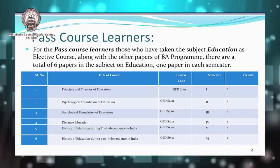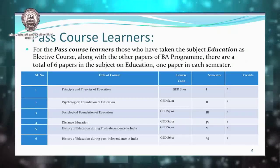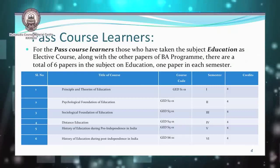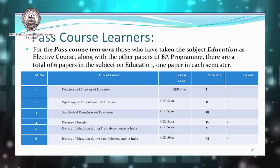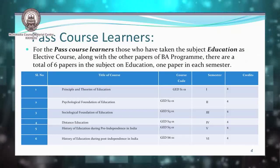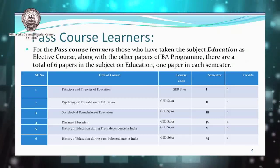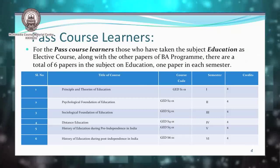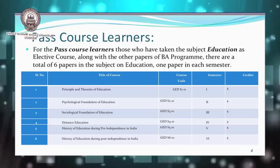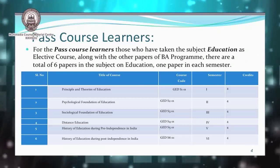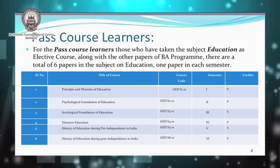For the pass course learners — those who have taken the subject education as elective courses along with other papers of the BA program, some of which are compulsory such as MIL, English, and other elective papers — there are a total of six papers in the subject of education, one paper in each semester.